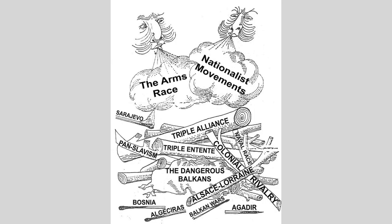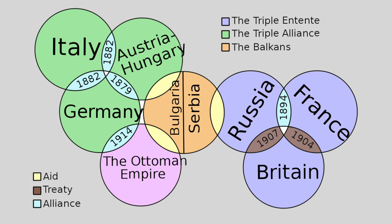All these factors led to the more direct cause of war: the alliances between nations. In 1879, the Dual Alliance was formed to protect Germany and Austria-Hungary from Russia. In 1881, the Austro-Serbian alliance between Austria-Hungary and Serbia was made to stop Russia from gaining control of Serbia. In 1882, the Triple Alliance between Germany, Austria-Hungary, and Italy was made to stop Russia's attempt to ally with Italy.